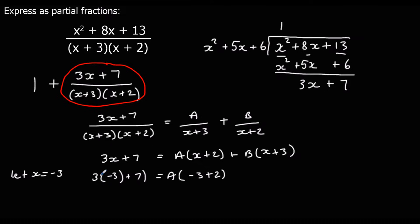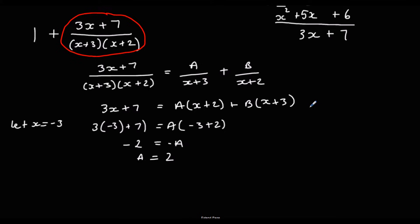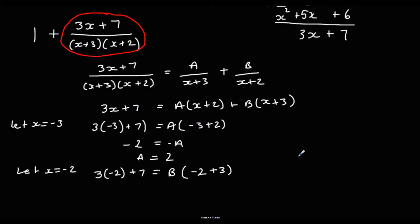So −9 + 7 is −2, equals −1 times A, so A is 2. For B, we eliminate A by letting x equal negative 2: 3(−2) + 7 = B(−2 + 3), giving −6 + 7 = 1, which equals 1B, so B is 1.